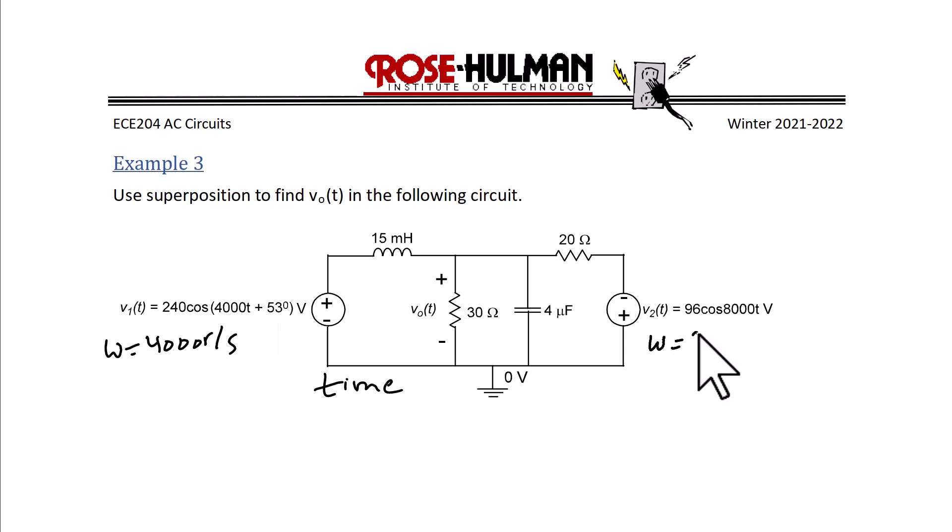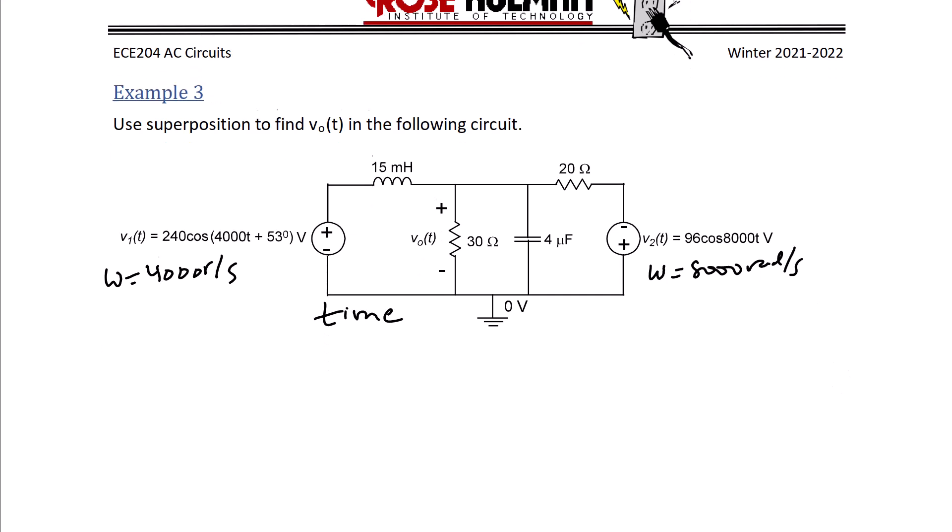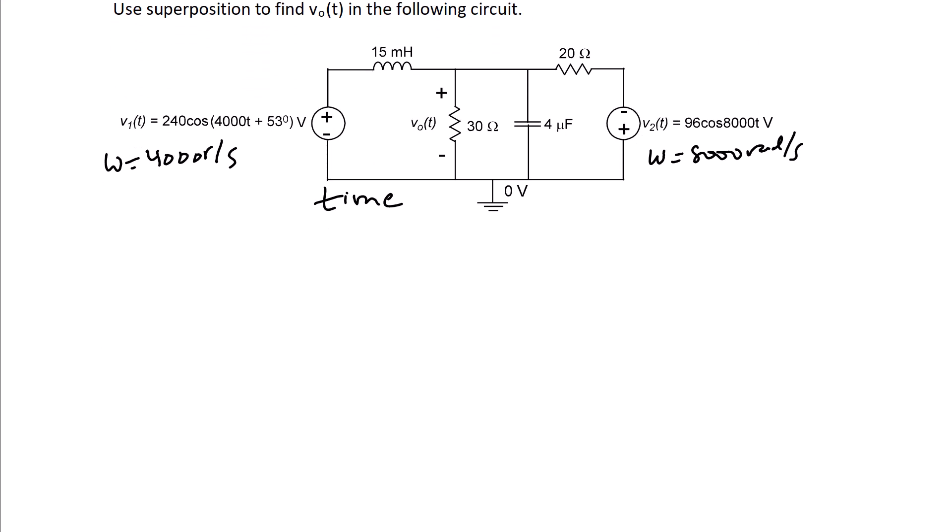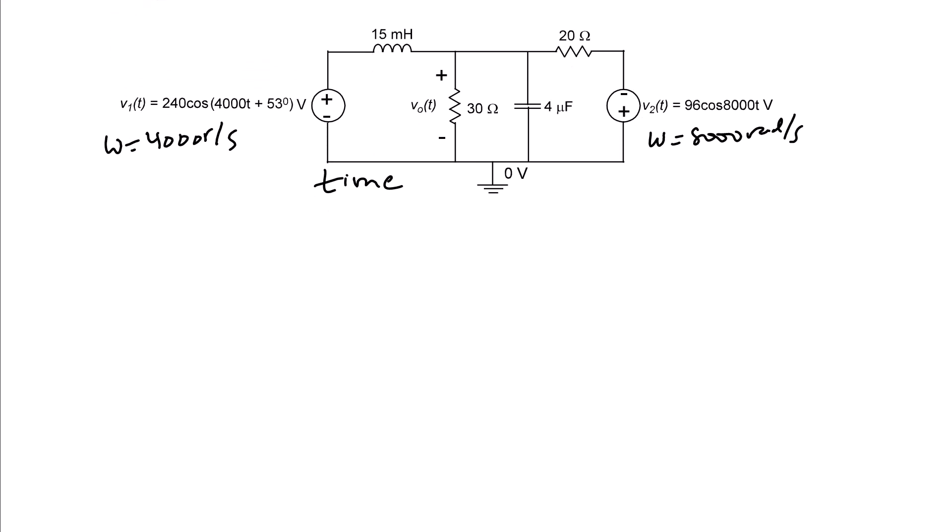And what we're going to do is draw this circuit twice. Once with the source on the left on and once with the source on the right on. For the source on the left on, we're going to use the frequency of 4000 radians per second. So first we're going to sketch out the circuit and we're going to replace the right source with a wire.